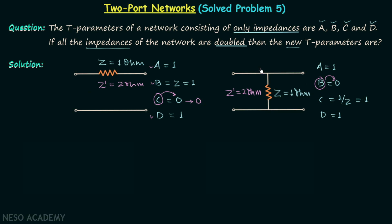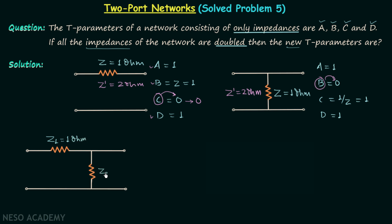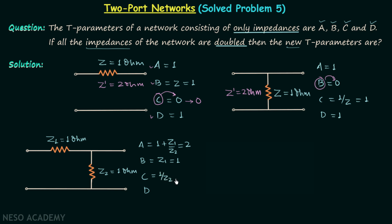So I will combine these two networks into a single two-port network. This is impedance Z1, equal to one ohm, and this is impedance Z2, also equal to one ohm. From the previous lecture, we found the parameters: A equals one plus Z1 divided by Z2, which gives A equals two. B equals Z1, so B equals one ohm. C equals one over Z2, so C equals one ohm. And D equals one.